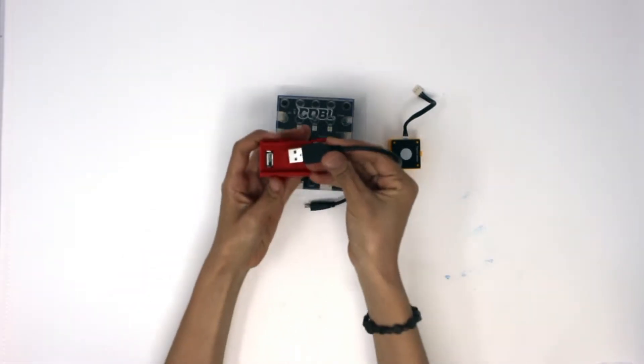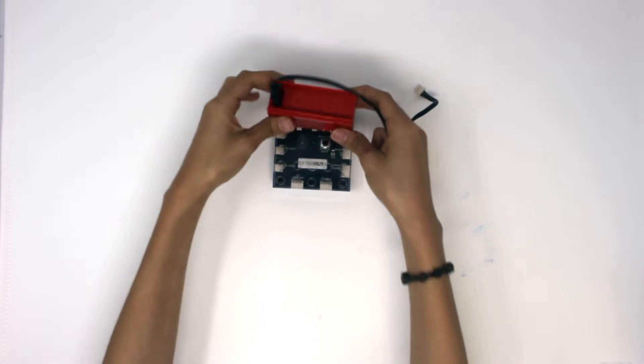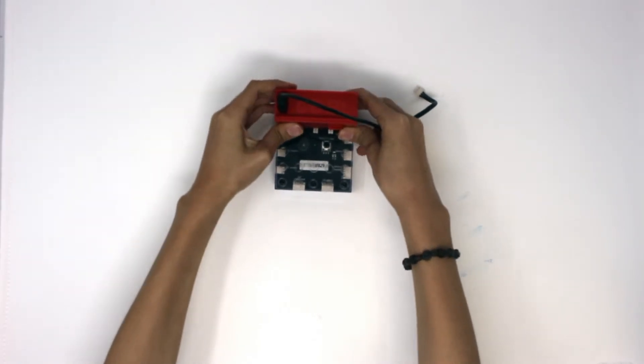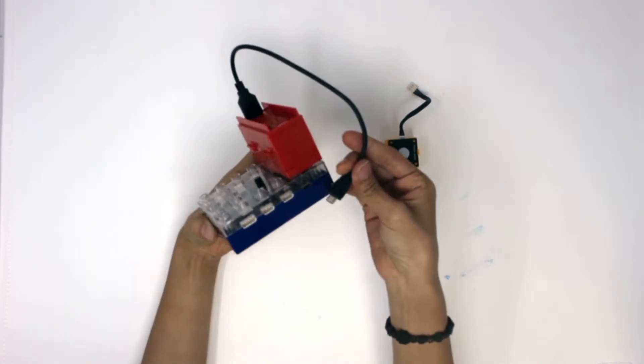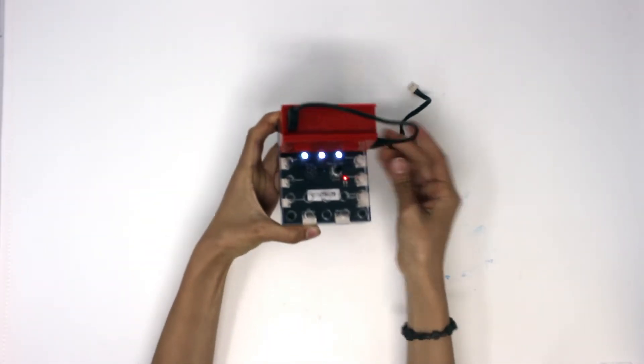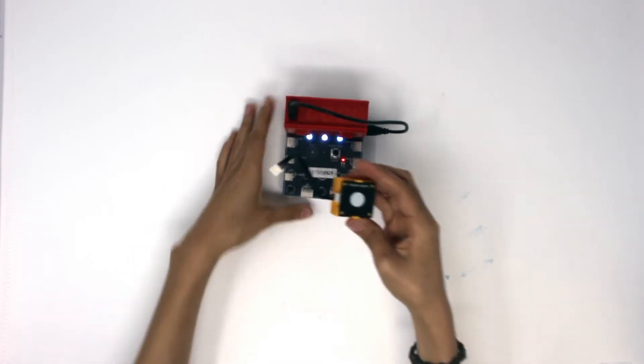To start, plug the larger end of the USB cable into the power bank. Attach the other smaller end into the cobalt CPU port labeled Power. It should beep.